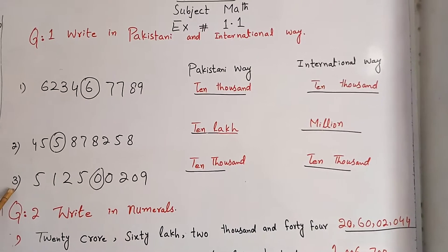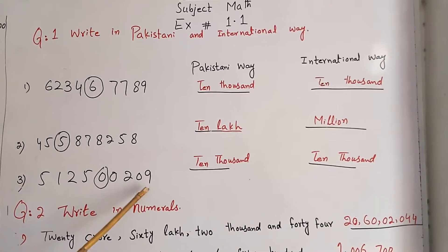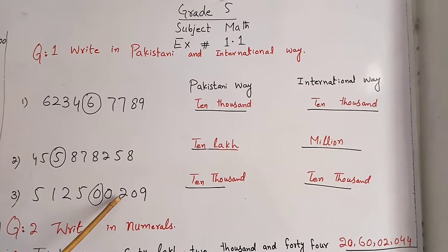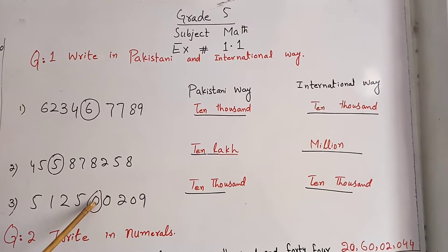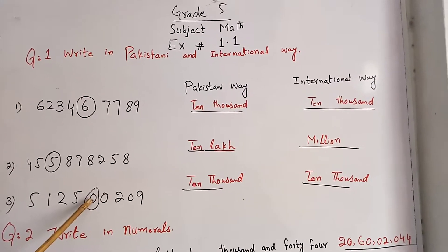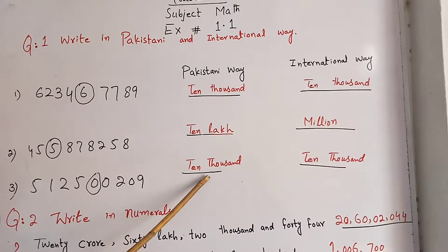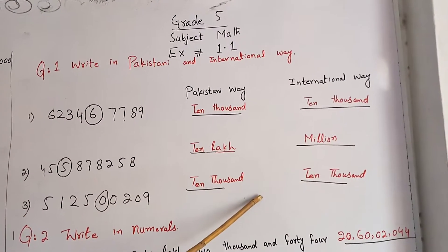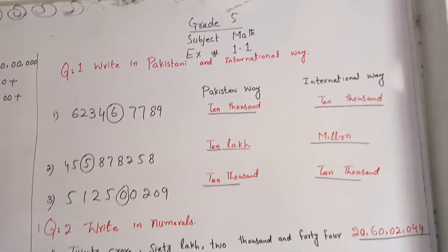Similarly, moving to question number 3 — in question number 3, the place values are: ones, tens, 100, 1000, 10,000. Its value is 10,000. So in both the international way and the Pakistani way, the place value will be 10,000.